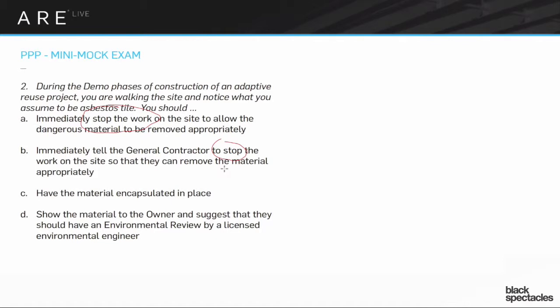With A and B, the architect is walking on site and just telling people to stop work. You have no idea about what's going on with the schedule — it's not your role. There might be penalties if the contractor comes in late, or timing issues with other workloads. You'd also be taking on liability around schedule, which can be significant financially. So A and B are definitely out — you're not telling anybody to stop the work.